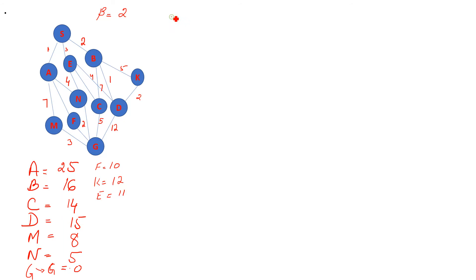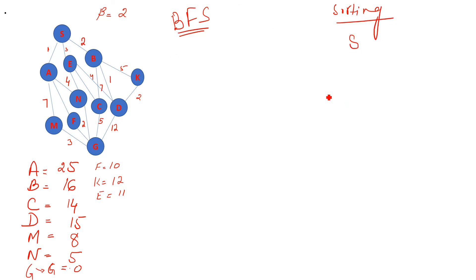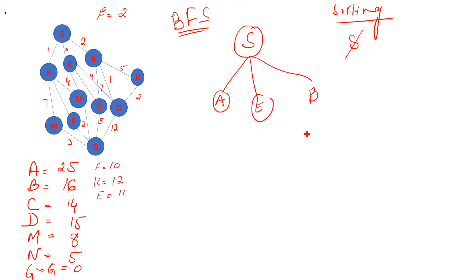We will first solve this example using best-first search, because beam search is a modification of BFS. We start our journey from S and need to reach the goal state G. The heuristic values are already given — for example, from A to G is 25, from B to G is 16, and so on. Starting from S, we cross it out to indicate it's been explored, and we see three routes from S: A, E, and B.